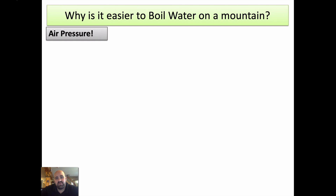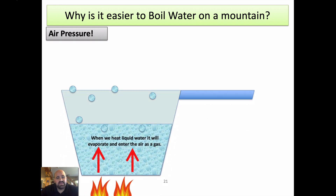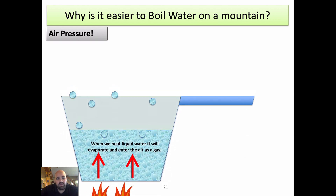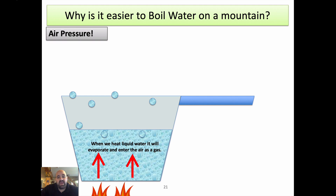We know water boils at 212 Fahrenheit or 100 Centigrade — why is that number universal? So we're going to talk about that. Let's say we have a pot of water with some fuego hitting it with fire. We know that we have liquid water just changing phase — the water is not disappearing; it's turning into water vapor gas. It's still the same H2O, the same water molecules.